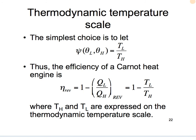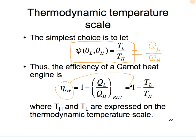The simplest relation is to set the ratio of heat transferred between the two reservoirs equal to the ratio of temperatures of those two reservoirs on the thermodynamic temperature scale: QL over QH equals TL over TH. This is the definition used in thermodynamics. Using this definition, we can conveniently relate the thermal efficiency of a Carnot heat engine to the temperatures of the two reservoirs on the thermodynamic temperature scale.